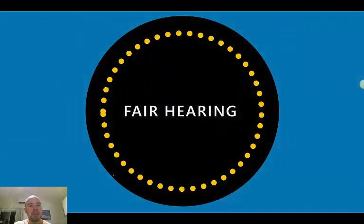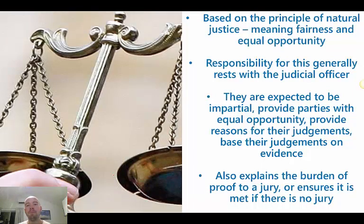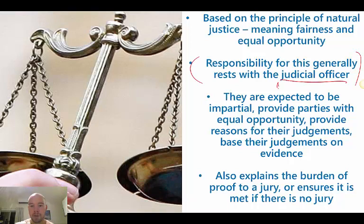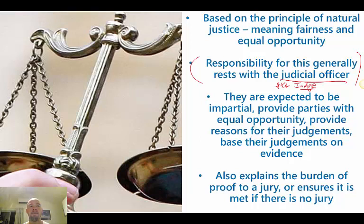Our second right is the right to a fair hearing. This is directly aligned with our principle of justice — fairness — and the responsibility rests with the judicial officer, or in criminal trials specifically, the judge. They need to be impartial, which is one of the main features of ensuring the principle of fairness in our legal system. They have to provide reasons for their judgments and, when they sentence someone, provide sentencing remarks showing why they made that decision. So there's an element of transparency to make sure fairness and natural justice are upheld.